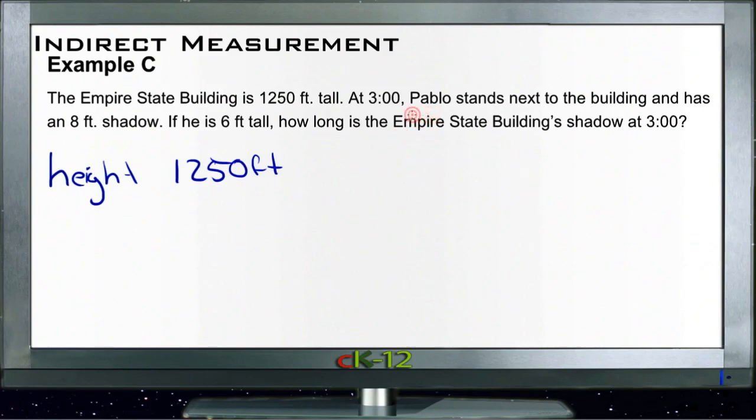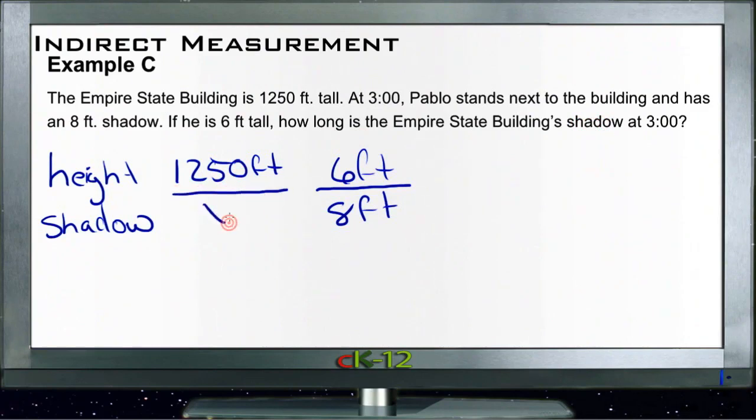At 3 o'clock, Pablo stands next to the building, and he has an 8-foot shadow. So Pablo's shadow is 8 feet, and Pablo is 6 feet tall. We want to know how long the Empire State Building's shadow is. So that's the missing length.